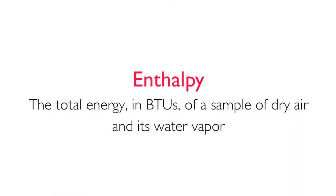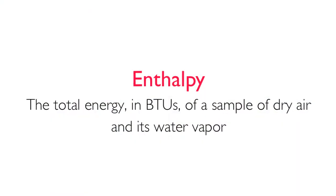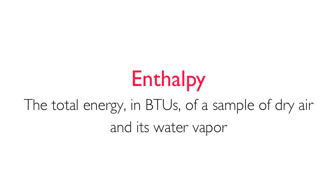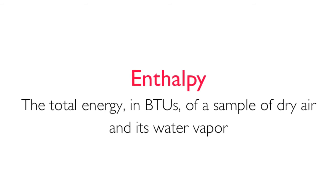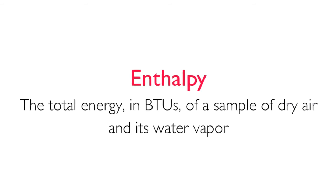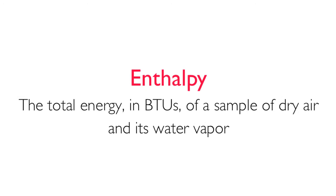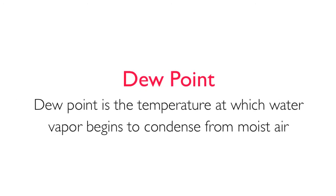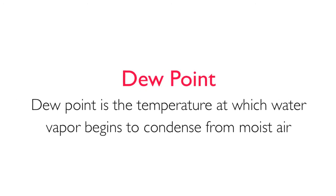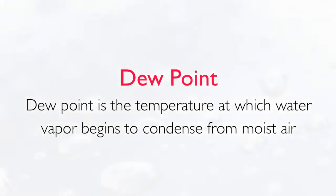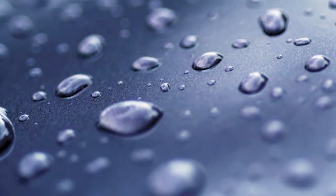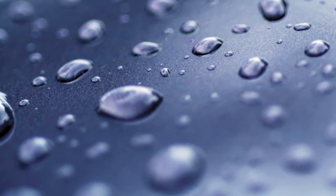Enthalpy is the total energy in BTUs of a sample of dry air and its water vapor. Enthalpy can't be measured directly, but changes in it can. Dew point is the temperature at which water vapor begins to condense from moist air. Dew is formed because the air is saturated and can't hold any more water vapor.